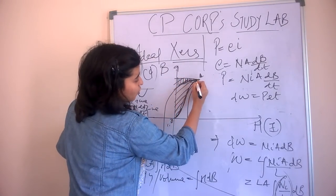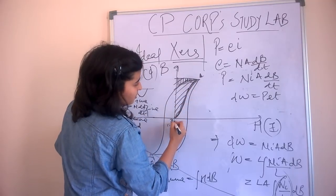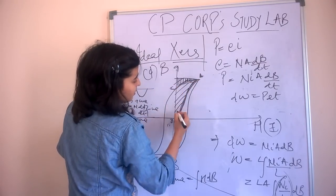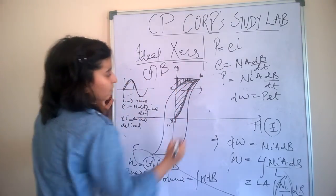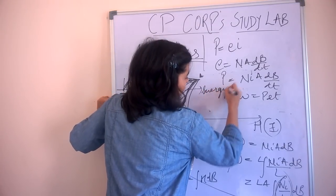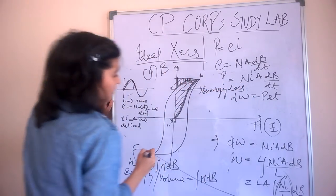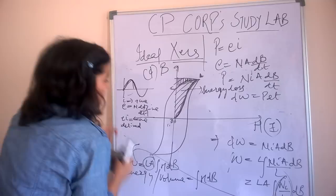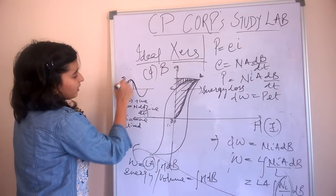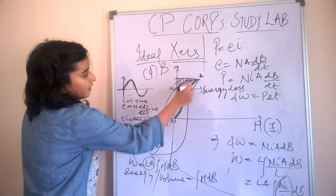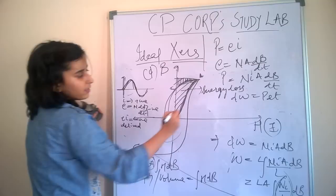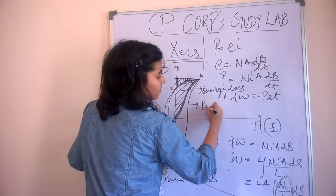So energy loss is equal to this portion. When we see the current in the complete cycle, the entire hysteresis loop gives us the loss in energy, which is equal to hysteresis loss.